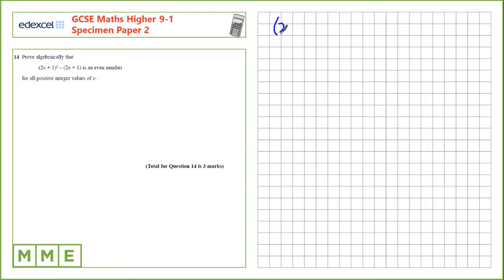So 2n plus 1 all squared is the same as writing 2n plus 1 times 2n plus 1, and then we're going to take away 2n plus 1 after that. Let's expand this: 2n times 2n is 4n squared, 2n times 1 is just 2n, 1 times 2n is 2n again, and 1 times 1 is 1.